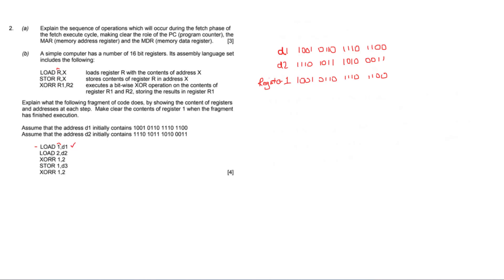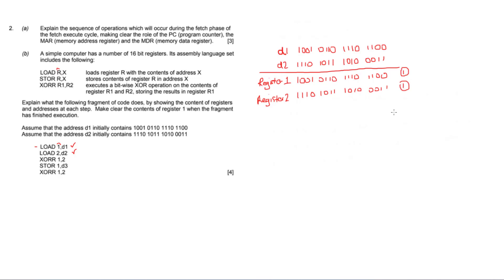I've done that line of code and move to the next: LOAD 2 d2 creates a new register 2 and loads it with the contents of d2 — 1110 1011 1010 0011. So all I've done is made a copy of both values into two new registers. So far so good. Doing this correctly gets you two marks — one for each correct register copy.